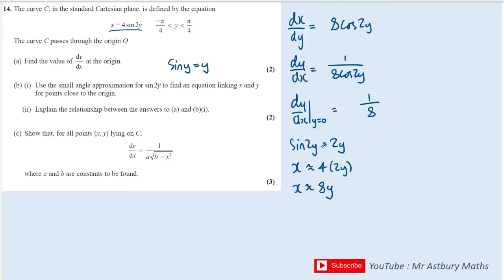And whoops, these should have been approximately signs, because we're using a small angle approximation. And the next part says explain the relationship between your two answers. Well, here we have the gradient, and here we can see that y is approximately equal to 1 over 8x. So the answer to part B will be that they both show the gradient is 1 over 8 near the origin.